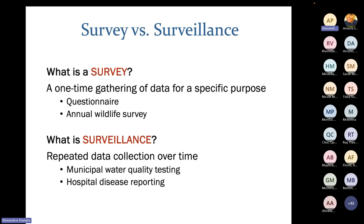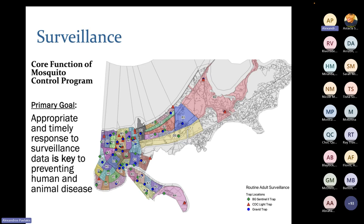Before talking about surveillance, we need to understand the difference between a survey and surveillance. A survey is a one-time gathering of data for a specific purpose — like a questionnaire at a supermarket. Surveillance is repeated data collection over time. We conduct weekly surveillance of our mosquito populations — this is the core function of our mosquito control program. Our primary goal is to have an appropriate and timely response to our surveillance data so we can prevent human and animal disease, acting within that week rather than waiting months.